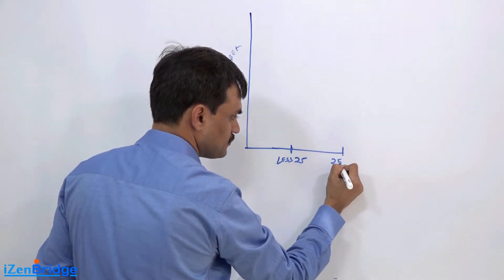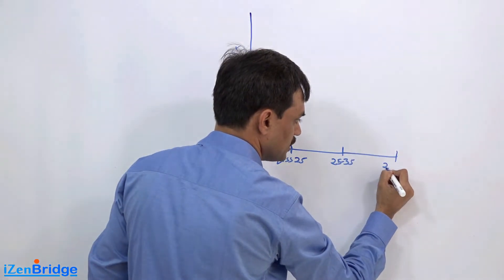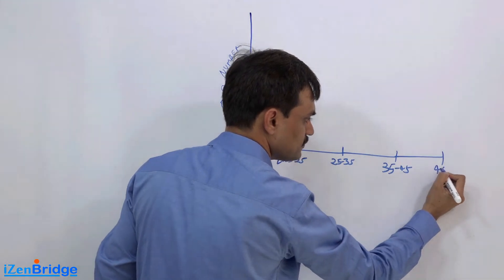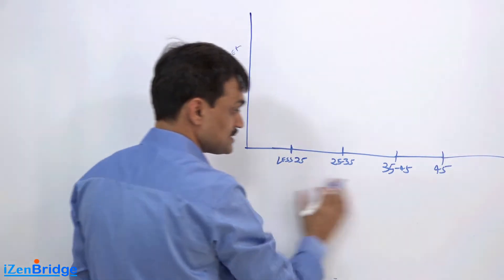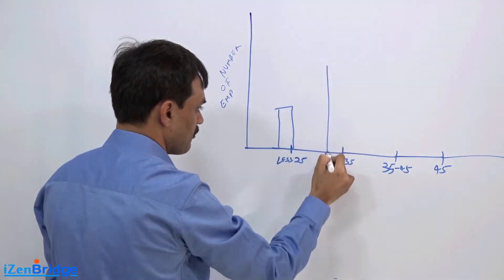Then 35 to 45, and then more than 45. That's it. This is a scale you created, and you plot the number of employees you have in each respective bucket.